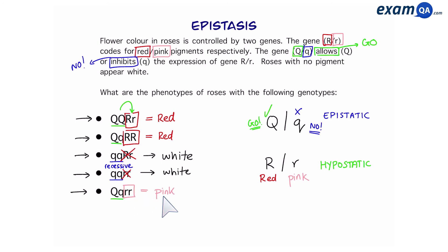So in this video we started on epistasis and spoke about what happens during recessive epistasis. In the next video we're going to look at ratios in recessive epistasis.